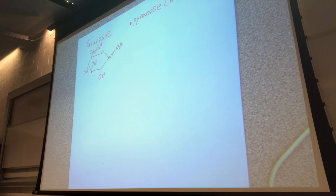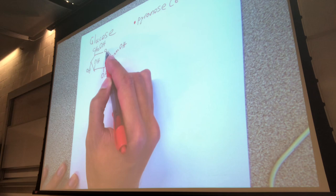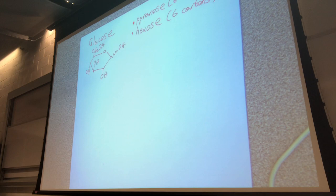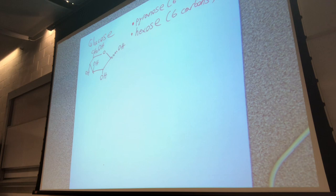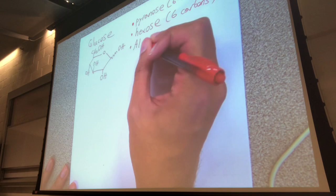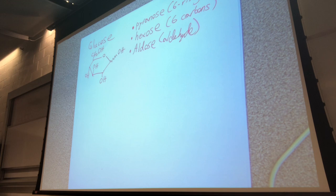Glucose has six carbons — note that the top right corner atom is an oxygen, part of the ring, not a carbon. So glucose is a hexose. Just because something is a six-membered ring does not automatically mean it's a six-carbon structure. If the linear form of glucose has an aldehyde, you can also describe glucose as an aldose.